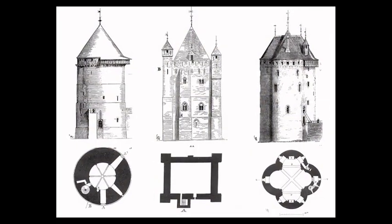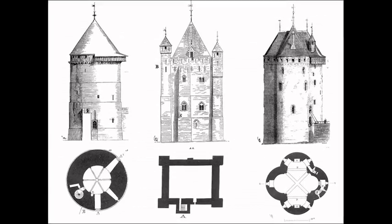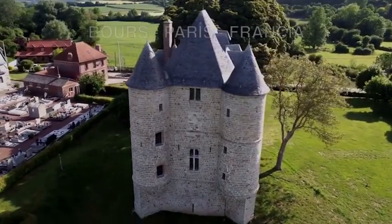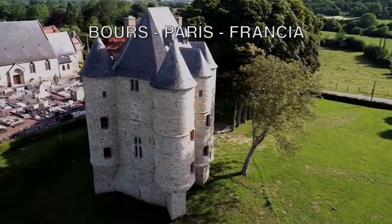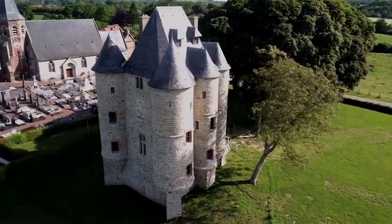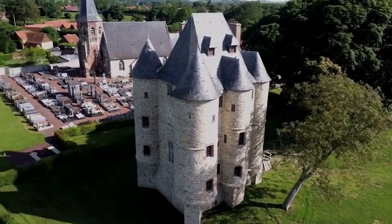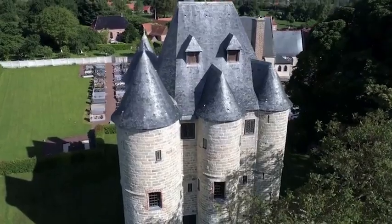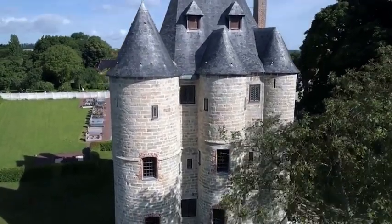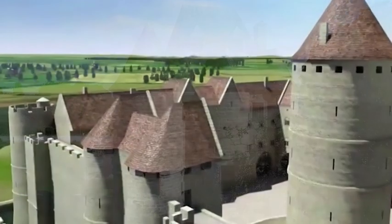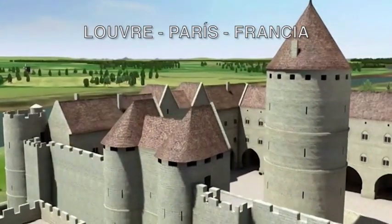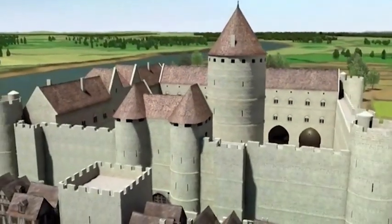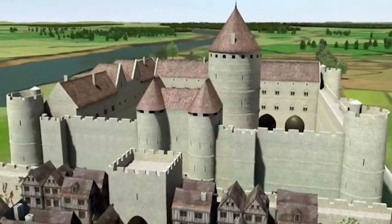En los castillos de Francia, el gran torreón central se denominaba Don John. Tenían diversa tipología. Si alguno destacó por su importancia singular, fue el Don John del Louvre: un gran torreón circular, hoy reconstruido, en torno al cual se formó el primer castillo real de París y luego el palacio con el actual museo.